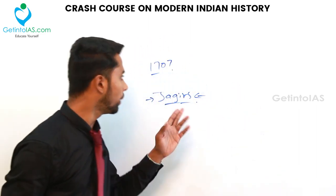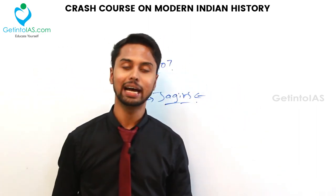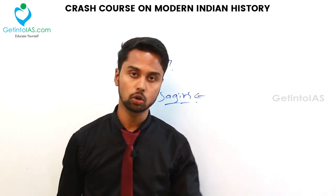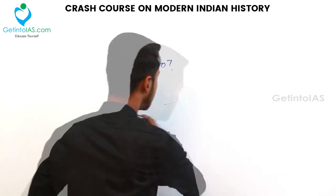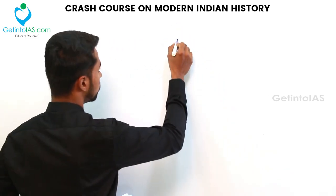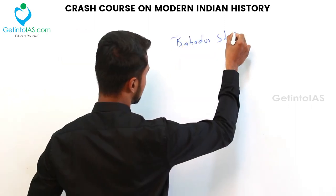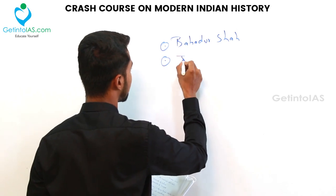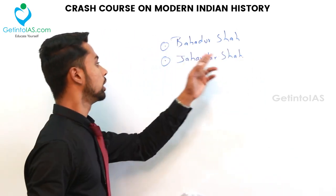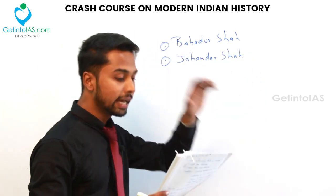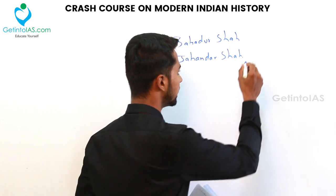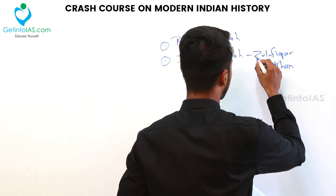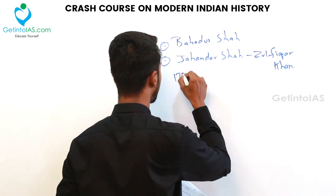In 1712, Bahadur Shah died, which again led to confusion about who would ascend the throne. Next, Jahandar Shah ascended the throne with the help of Zulfikar Khan in the year 1713.